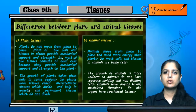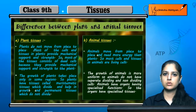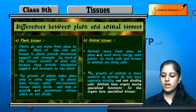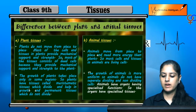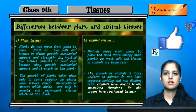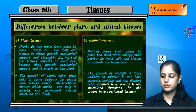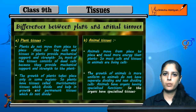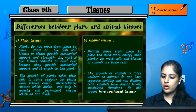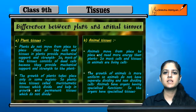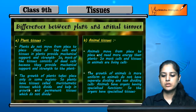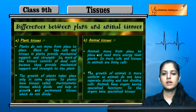Animal tissues do not have separate dividing and non-dividing cells — this is not a separation seen in animal cells. These are the basic differences between plant tissues and animal tissues, and we are done with the chapter on tissue.